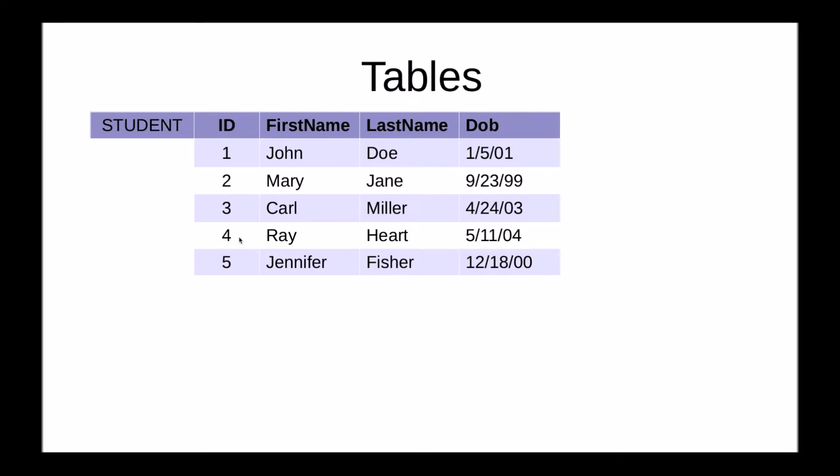Rows in a database are often referred to as tuples. A single tuple here is for example ID 3, Carl Miller, born on April 24, 2003.